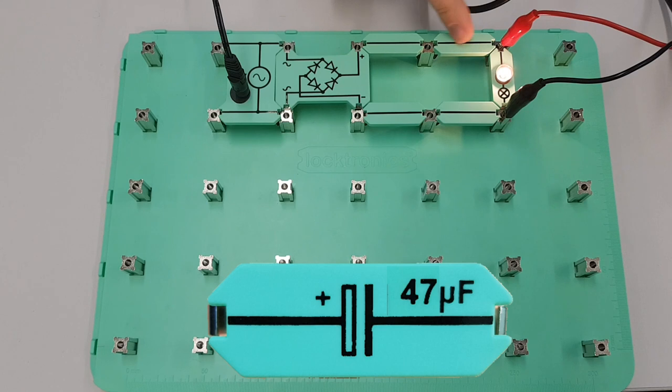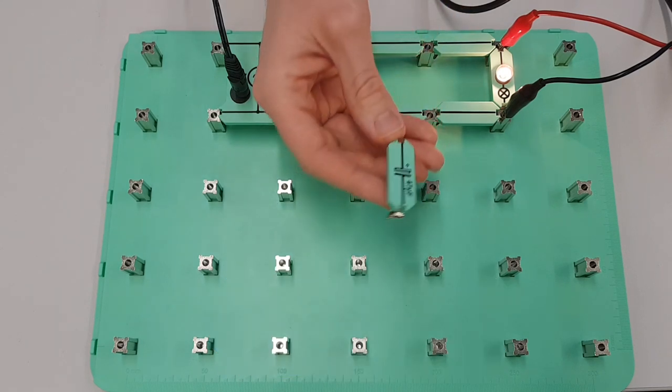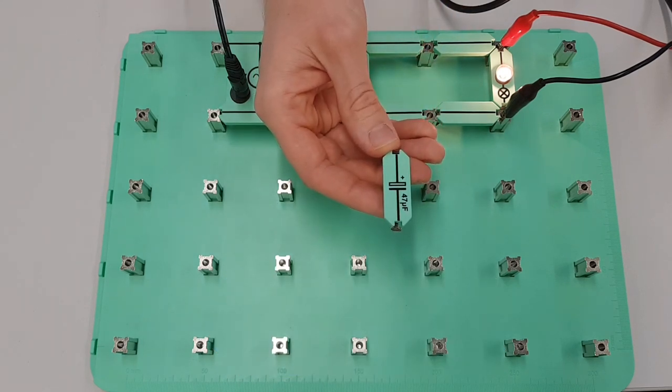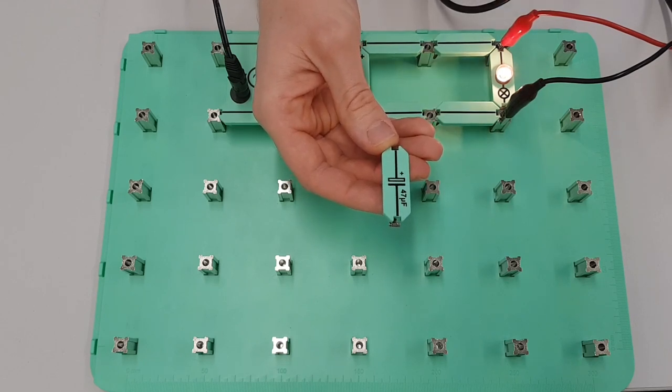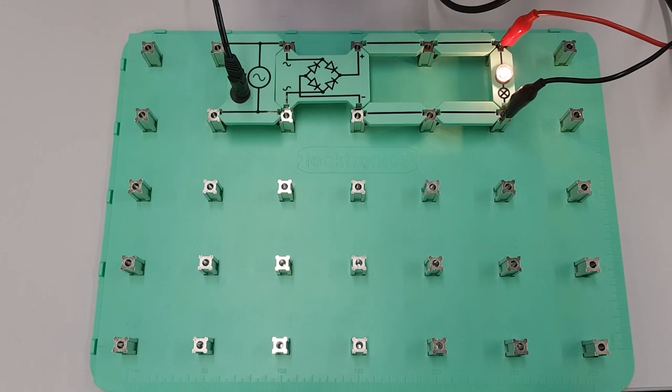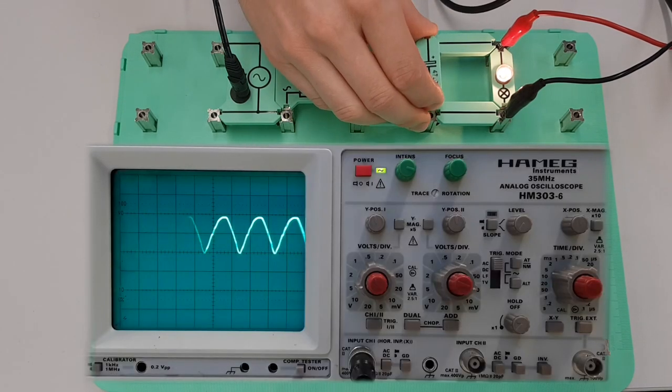So on this circuit we've got the positive rail up here, as you can see. So we'll connect it that way around with the positive side of the capacitor connected into the positive side of the circuit. We'll connect this in and have a look at what happens to the waveform on our oscilloscope.